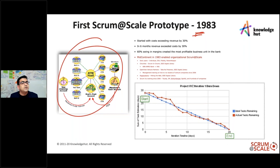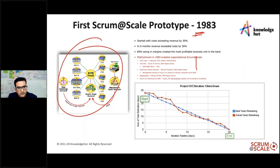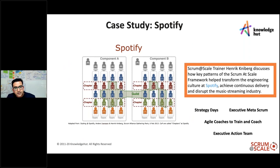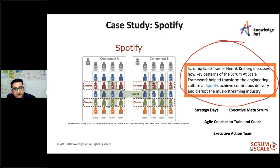Many companies in the early years — IDX (now GE Healthcare), ABN AMRO, and ING — all used Scrum at Scale. If you were working on Scrum with multiple teams, you've utilized Scrum at Scale at some point. Spotify's case study is on the Scrum at Scale website — showing how Spotify implemented the key patterns of the Scrum at Scale framework to transform engineering culture and achieve continuous delivery, disrupting the entire music streaming industry.